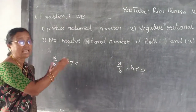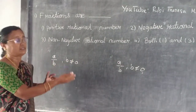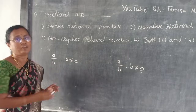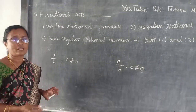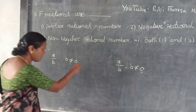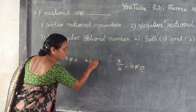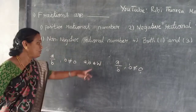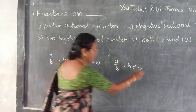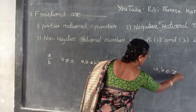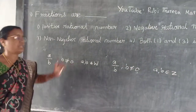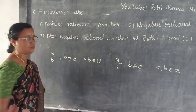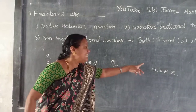But here is where it differs. For fractions, A and B belong to W — that means whole numbers. For rational numbers, A and B belong to Z — that means integers.